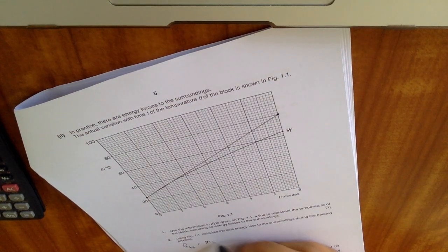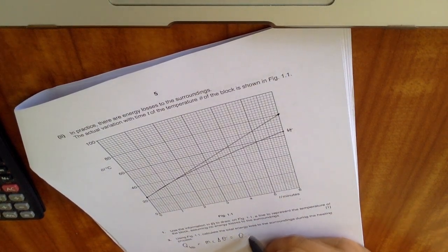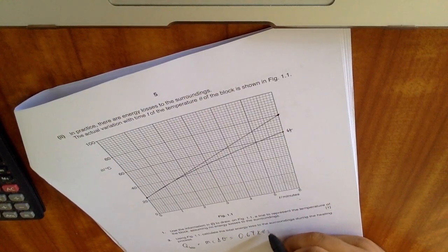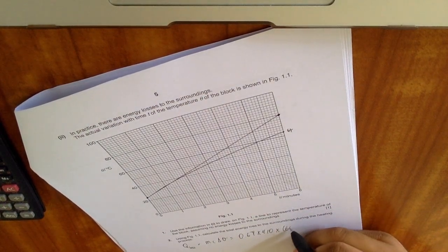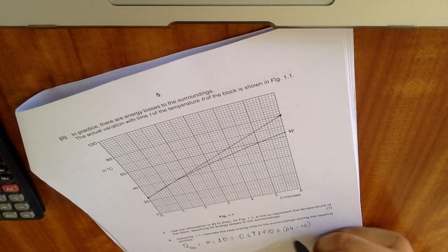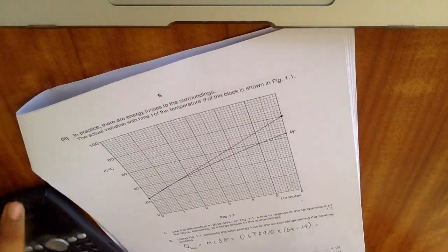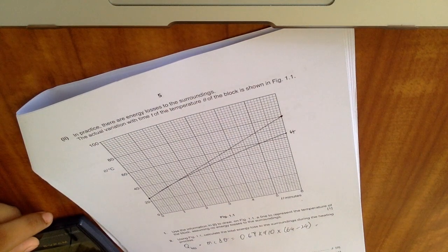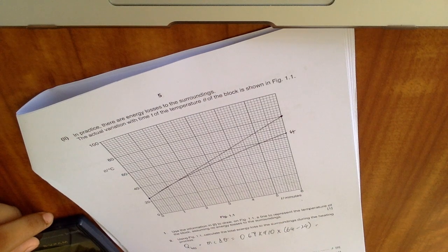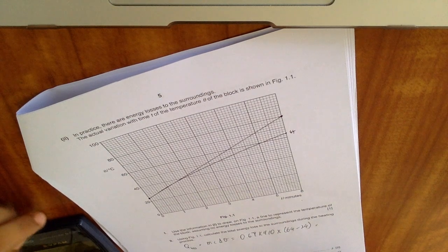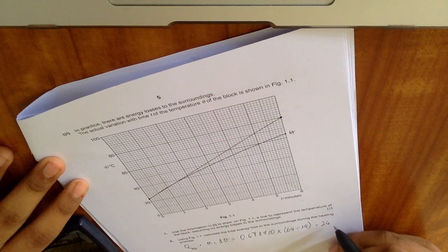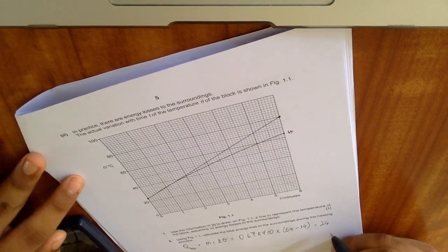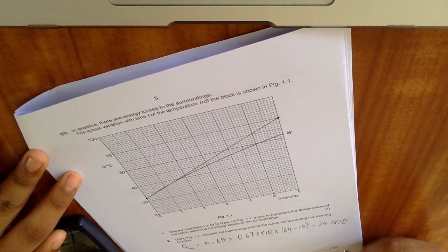Which is 0.67 into 910 into 64 minus 24, which gives you 40. So we just do a quick multiplication: 0.67 into 910 into 40 gives you 24,388. We just put it as 24,000 to two significant figures.